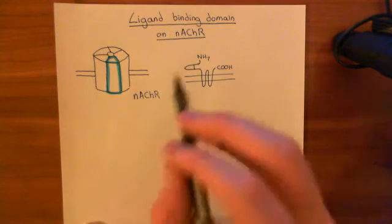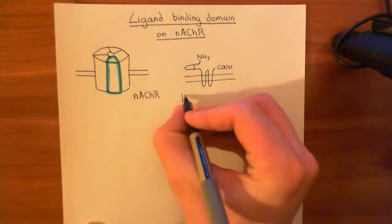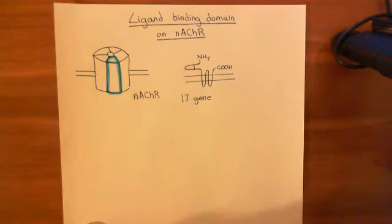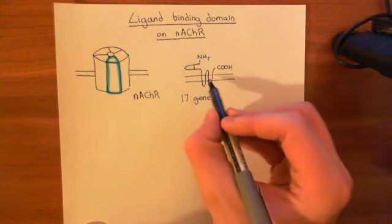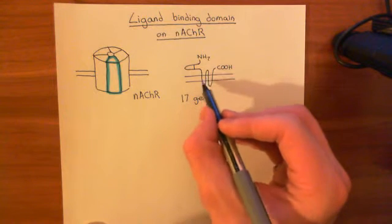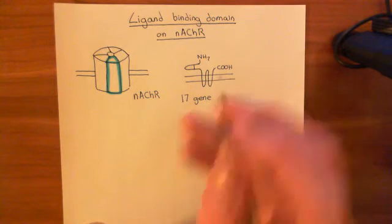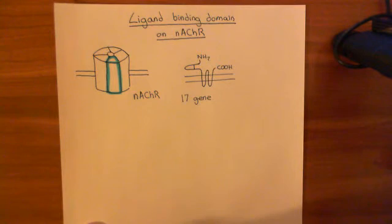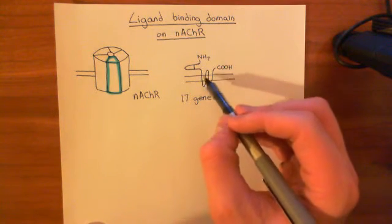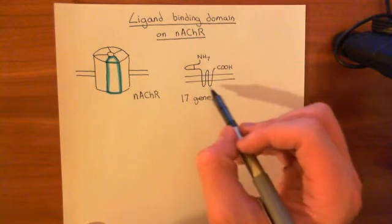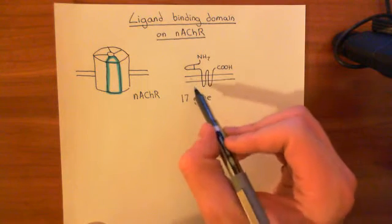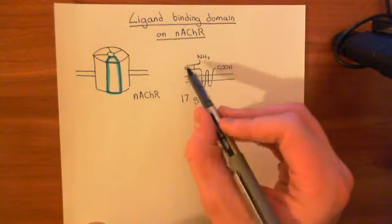This is the membrane-spanning topology of a single subunit; you need five of these to make a full nicotinic acetylcholine receptor. In the human genome, we have 17 genes for nicotinic acetylcholine receptor protein subunits. They all have slightly different sequences and therefore lead to slightly different amino acid sequences, meaning you can produce 17 slightly different nicotinic acetylcholine receptor subunits.